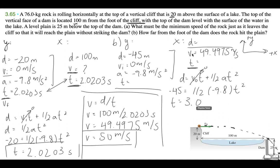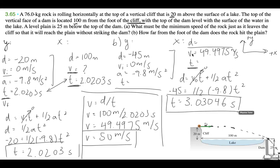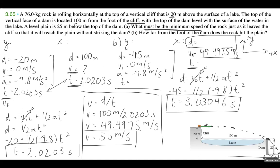We can find time from the y-component. Using d = ½·a·t² with d = minus 45 meters and a = minus 9.8 meters per second squared, solving gives t = 3.03046 seconds. That's the time to fall the full 45 meters. We use the minimum speed of 49.4975 meters per second because we want the rock to just pass the face of the dam without it being an obstruction.